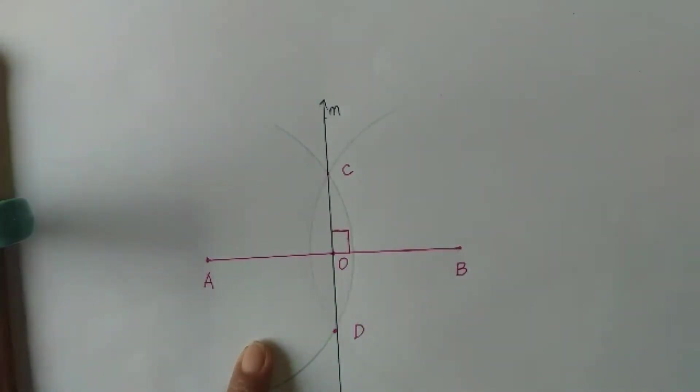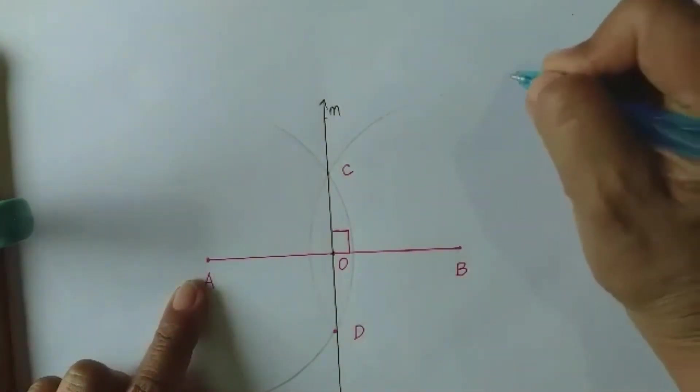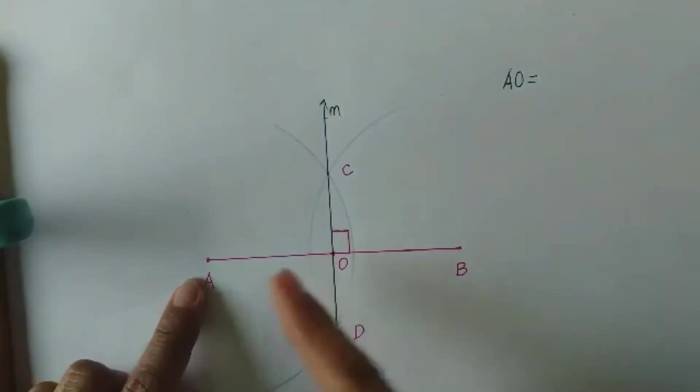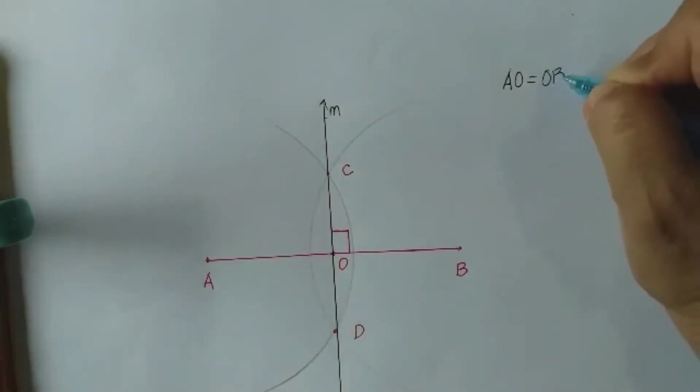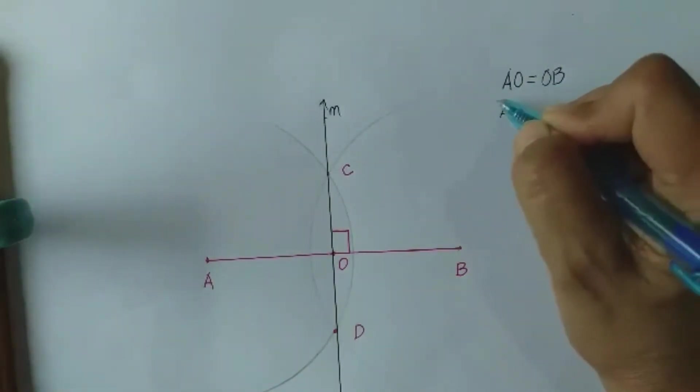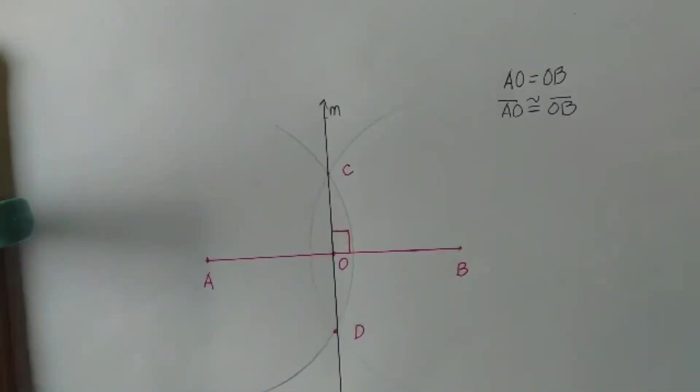And it is also now the perpendicular bisector. The distance from point A to point O is equal to the distance from point O to point B, or segment AO is congruent to segment OB since they have the same measurement.